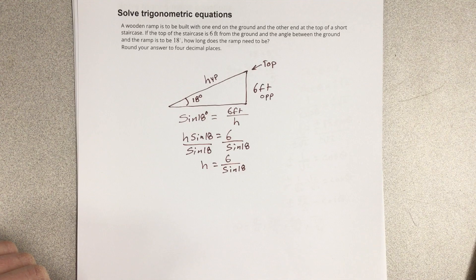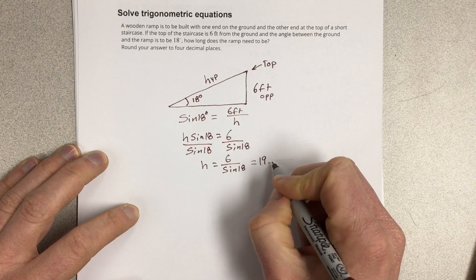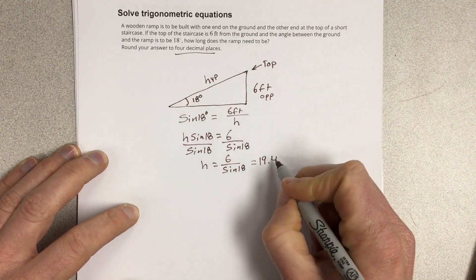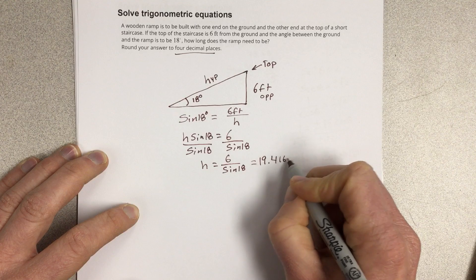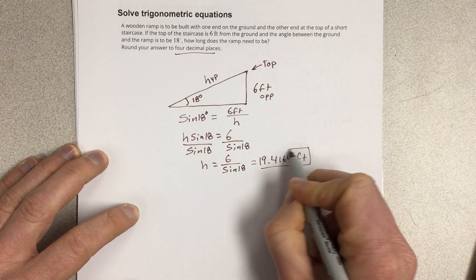It tells us that's 19.4. To four decimal places, 19.4164 feet is the length of the ramp.